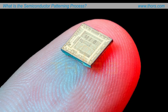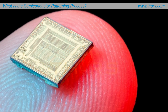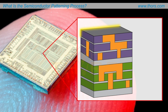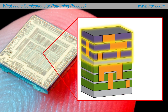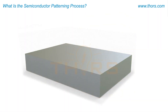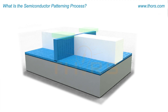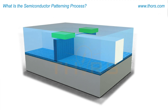A semiconductor device such as a microchip is made of many layers of intricate structures that play a critical role in its functionality and performance. These microchips are fabricated on wafers that undergo multiple processes to build the layers and structures included in the intended circuit design.